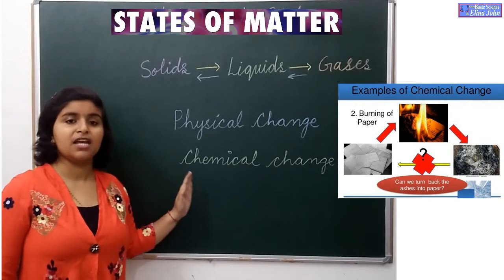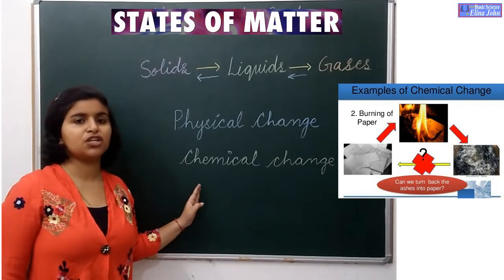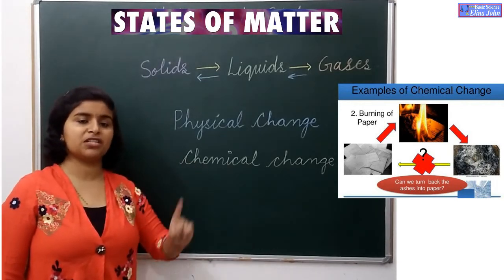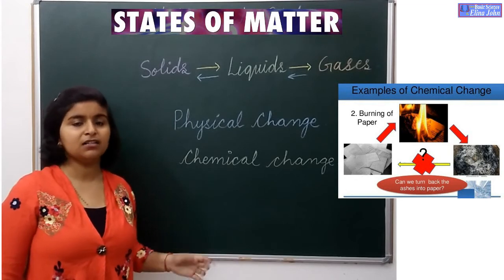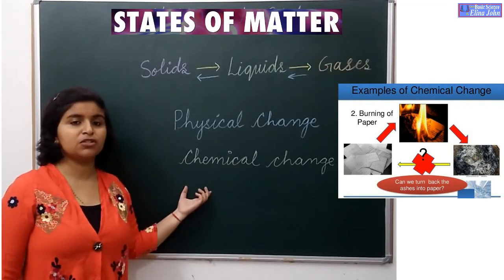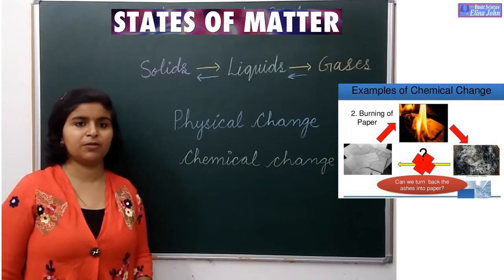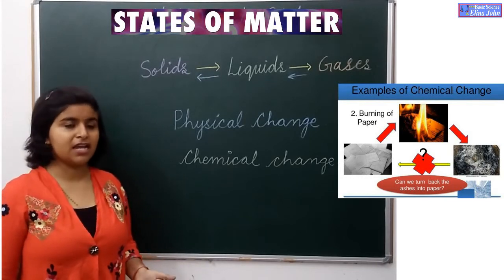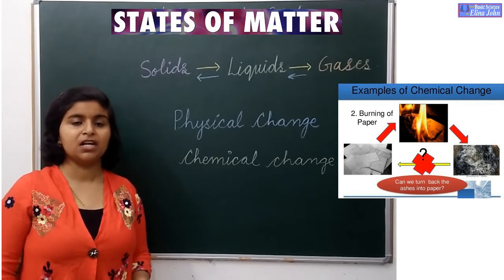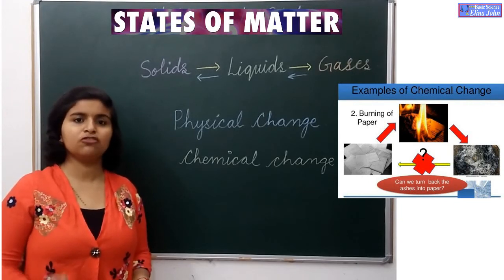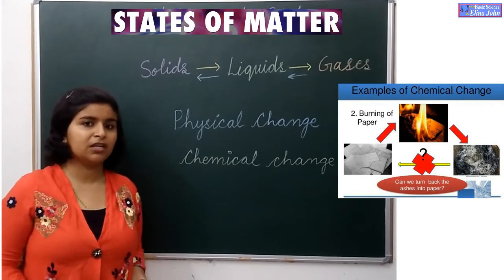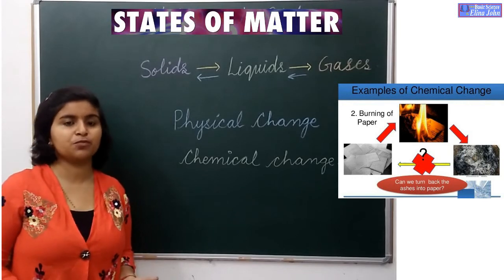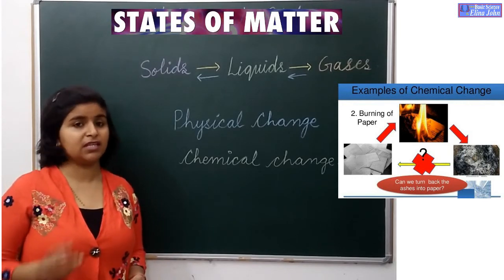Next, we have chemical change. Chemical change is the change in which new substance is formed, and the properties of the new substance are totally different from the previous substance. Like we have burning of paper. When we burn paper, we don't get paper back but we get ash.